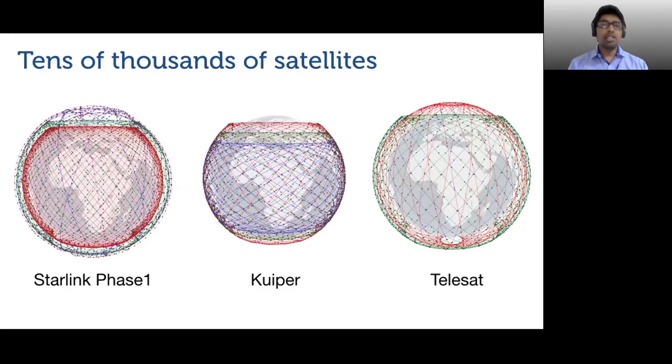Here you can see three largest planned LEO satellite networks. SpaceX Starlink Phase 1 consisting of five shells with a total of 4,409 satellites. Amazon Kuiper consisting of three shells with a total of 3,236 satellites. And finally, Telesat consisting of two shells with a total of 1,671 satellites. Let us see some of their interesting features.